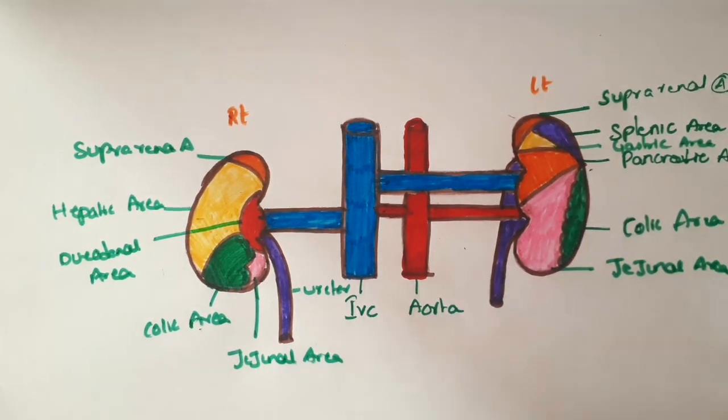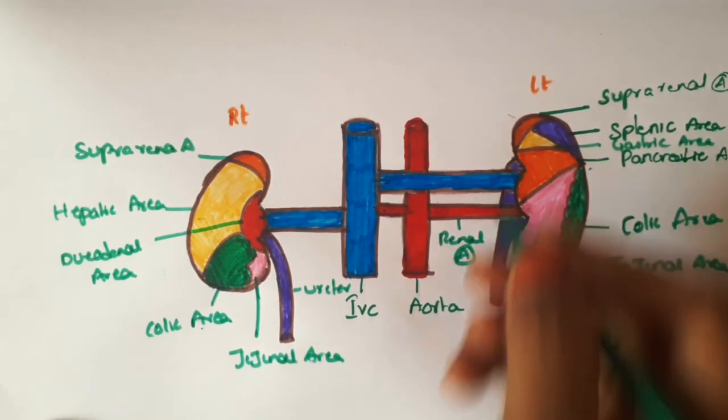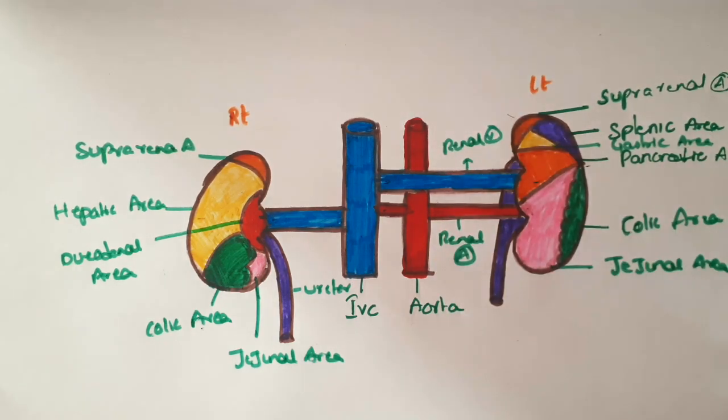This is the duodenum area. In this right side, hepatic area and this colic area. Both are covered by the peritoneum. This is the renal artery and renal veins.